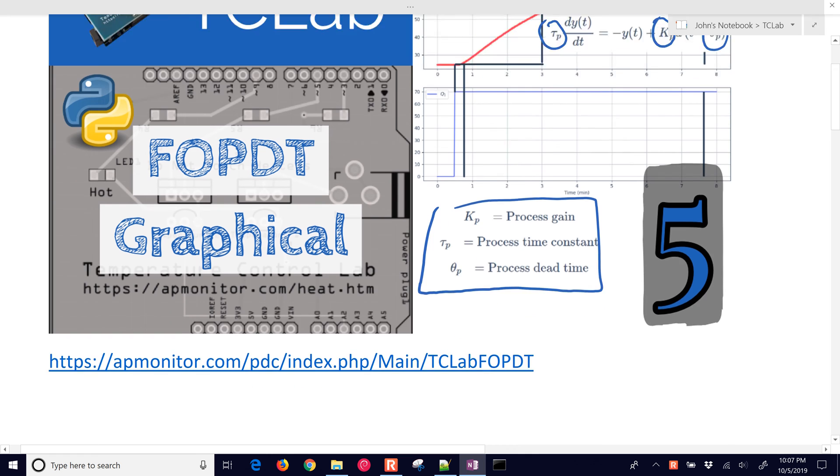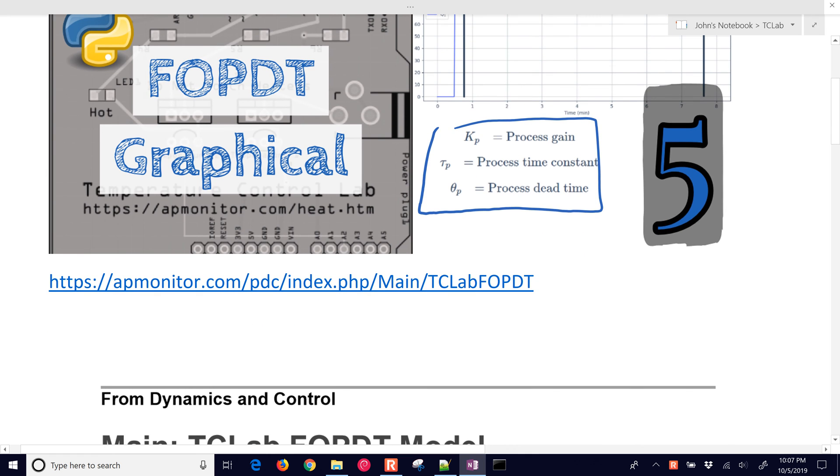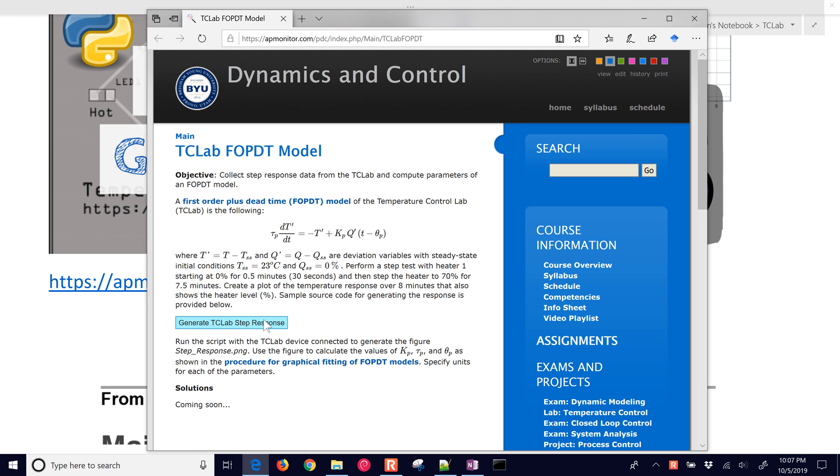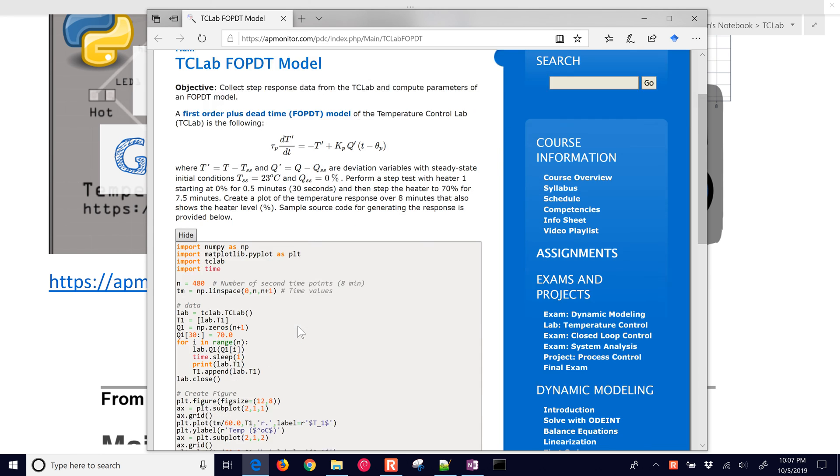The very first thing that we need to do is go ahead and collect some temperature control lab data. Visit this page right here. It'll show you the code to be able to generate the temperature response of turning the heater up to 70%.